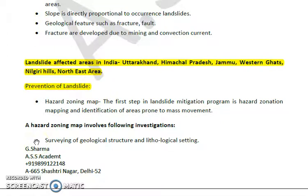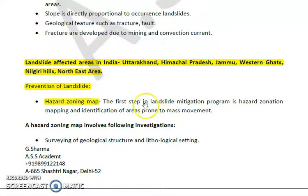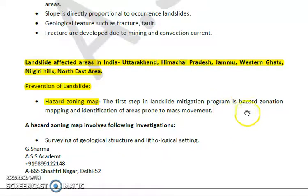Now let's look at how landslides can be prevented. The first step in a landslide mitigation program is hazard zoning mapping. This involves creating a map of landslide-prone areas, including the mapping and identification of areas prone to mass movements - wherever lands are vulnerable to landslides.